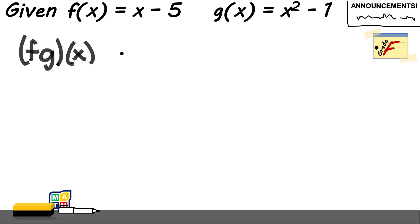And since it's multiplication, we could write it in this manner. We need to place parentheses to separate the two. So you have x minus 5 times g of x which is x squared minus 1. So with this,